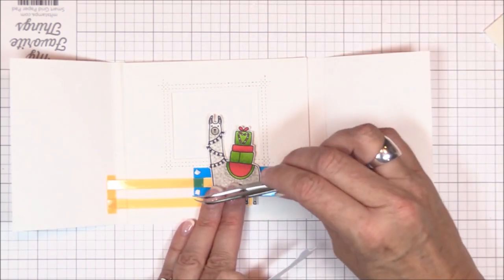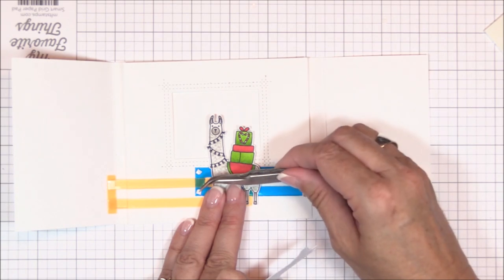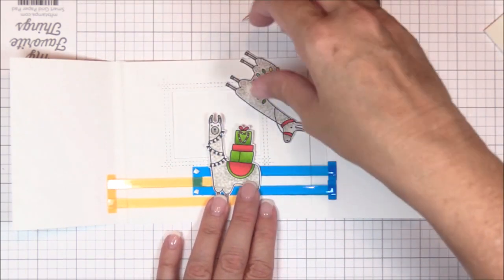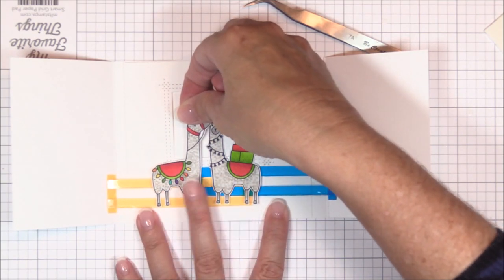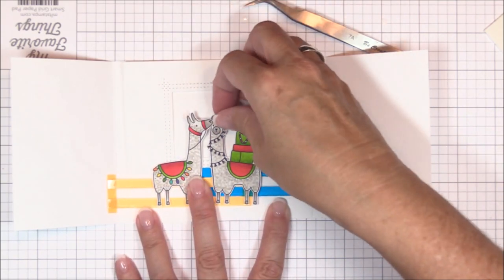And now I can adhere the second llama. I also wanted to point out that the front-facing llama is controlled by the yellow tab, and the right-facing llama is controlled by the blue tab. You'll see how it all works as we move along in the video.